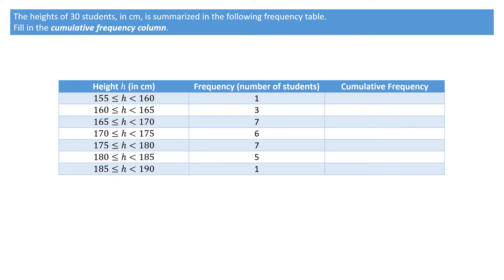Now the way this works is the first cumulative frequency will always equal the first frequency in the table, so that would just be one. To find the second cumulative frequency, we add to that one the second frequency, so that would be one plus three, which is four.